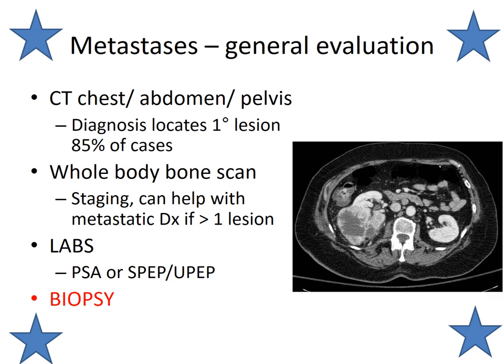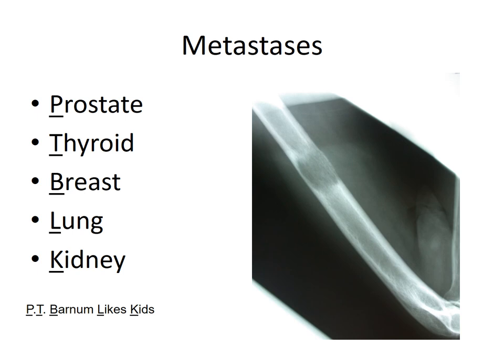Here again are the big five osteophiles — the tumors that have a predilection to travel to bone: prostate, thyroid, breast, lung, kidney. The CT scan shown here shows a large kidney lesion in a patient with renal cell carcinoma. I like to remember this as 'PT Barnum likes kids,' but some people prefer 'a BLT with a kosher pickle.' However you like to remember it doesn't matter — just remember it.